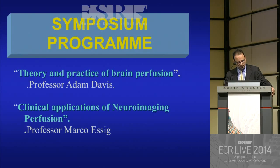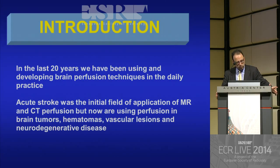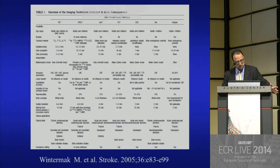What's the issue? What's the problem? Why are we here? In the last 20 years, we have been using and developing brain perfusion in daily practice. We use it on acute stroke patients, in brain tumors, but also in hematoma, vascular lesions, and neurodegenerative disease.